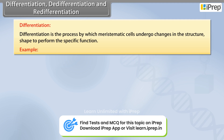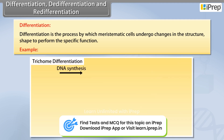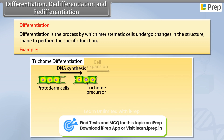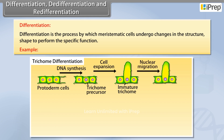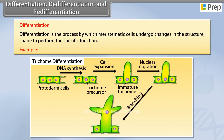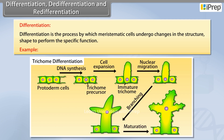For example, after the DNA synthesis of the protoderm cells, cell expansion takes place and it forms an immature trichome. After that, nuclear migration takes place, then branching occurs, and then it reaches the maturation stage.